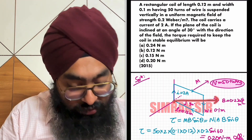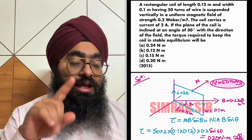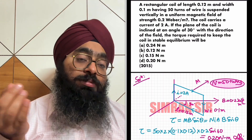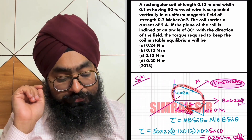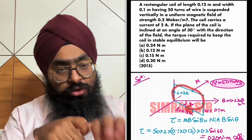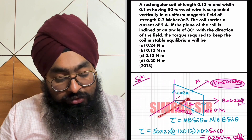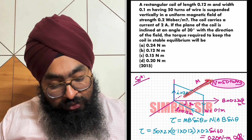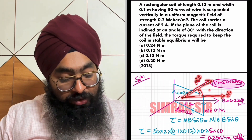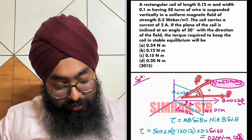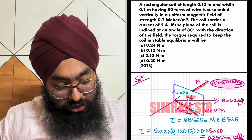Now, where is B? The current is flowing in the coil — curling the fingers of the right hand in the direction of current flow gives the direction of magnetic dipole moment. If current flows in a clockwise sense, the magnetic dipole moment direction is outward. So the M vector direction is this, B vector direction is this, and the angle between these two is needed. Since the total angle is 90 degrees, this angle becomes 60 degrees.